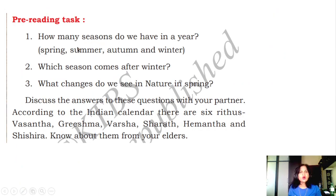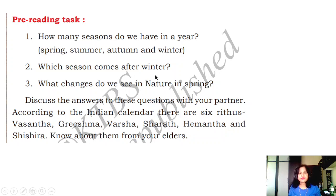Pre-reading. How many seasons do we have in a year? Four: Spring, Summer, Autumn, Winter. Which season comes after winter? Spring.